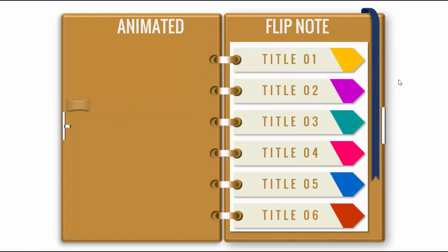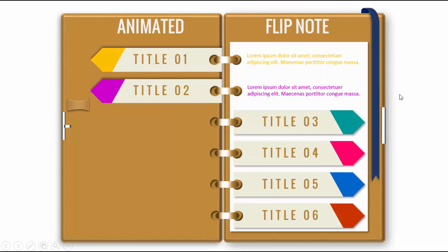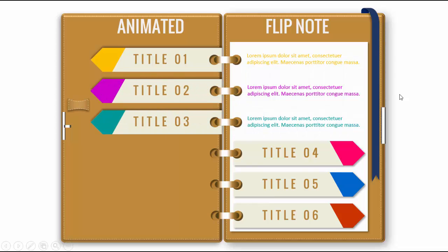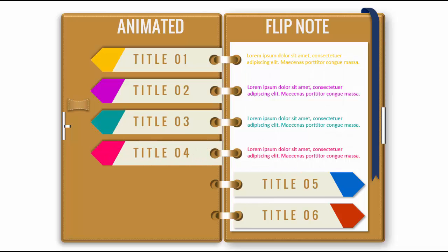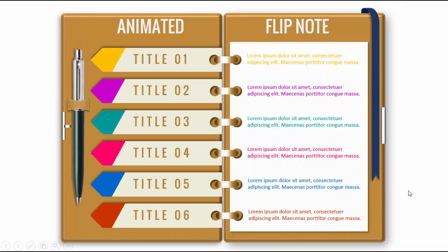There's a pen holder to hold the pen, and when I click it will show the title one and reveal the information. Similarly title 2, title 3, 4, 5, and 6 — you can add more if there's space. I downloaded a pen from the internet and just added it there.